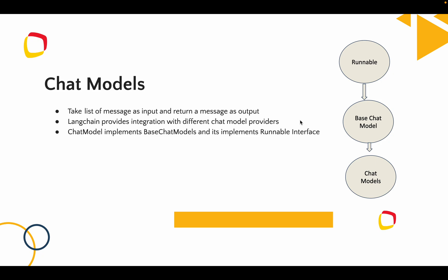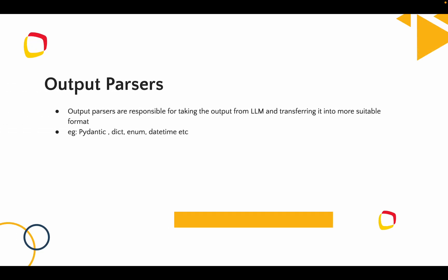That is about chat models. Output parsers are something used when the LLM model has generated a result — it is usually in a string format — and we need to convert that into the specific format we need. For example, we can convert it into a Pydantic object, a dict, enum, datum, etc. In this simple example, we will be using the string output parser.